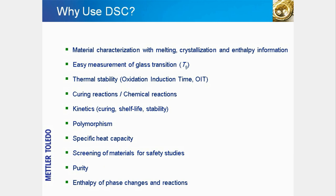DSC has a very wide application range and the method can provide a great deal of information. One of the most important applications is the characterization of samples according to their material-specific properties, such as melting, crystallization, and change in enthalpy on heating. The glass transition temperature can also be used to characterize materials, and this transition is an important physical property in its own right. Thermal stability as defined by the oxidation induction time or the decomposition temperature is an important quality control parameter.